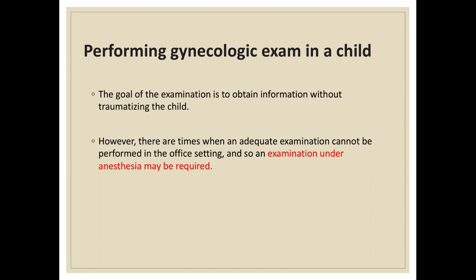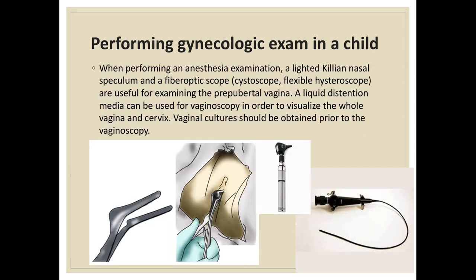There are times when an adequate examination cannot be performed in the office setting, and an examination under anesthesia may be needed. A lighted Killian nasal speculum, a fiber optic cystoscope, or a flexible hysteroscope are useful for examining a pre-pubertal vagina. A liquid distension media can be used for vaginoscopy to visualize the whole vagina and cervix. Since the patient is under anesthesia, vaginal cultures can be easily obtained prior to vaginoscopy.